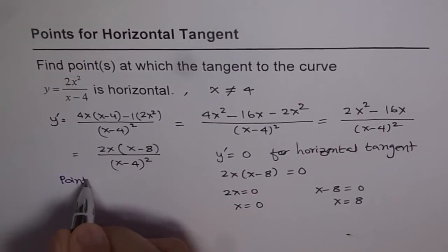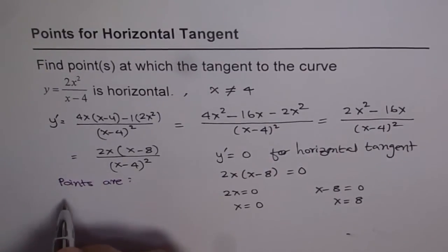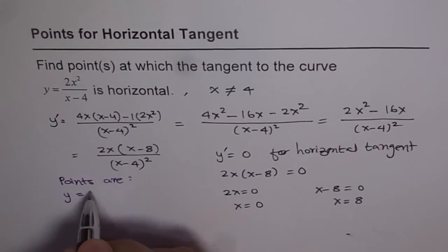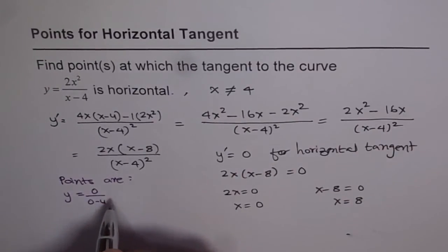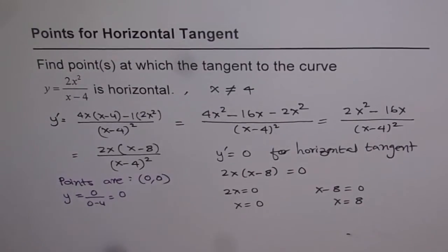The points are, this is your function y. So plug in 0, what do you get? We get 0 over 0 minus 4, which is 0. So this is the first point, which is 0, 0.